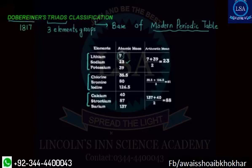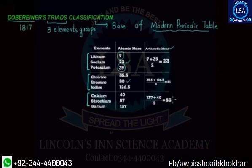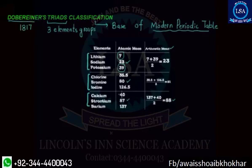For the first triad, we have atomic masses 7 and 39; their arithmetic mean gives us 23, which is sodium. For the second triad, 35.5 and 126.5 give us about 81, close to bromine's mass of 80. For the third triad, adding calcium and barium gives us close to 87, which is the mass of strontium (actual value 88).